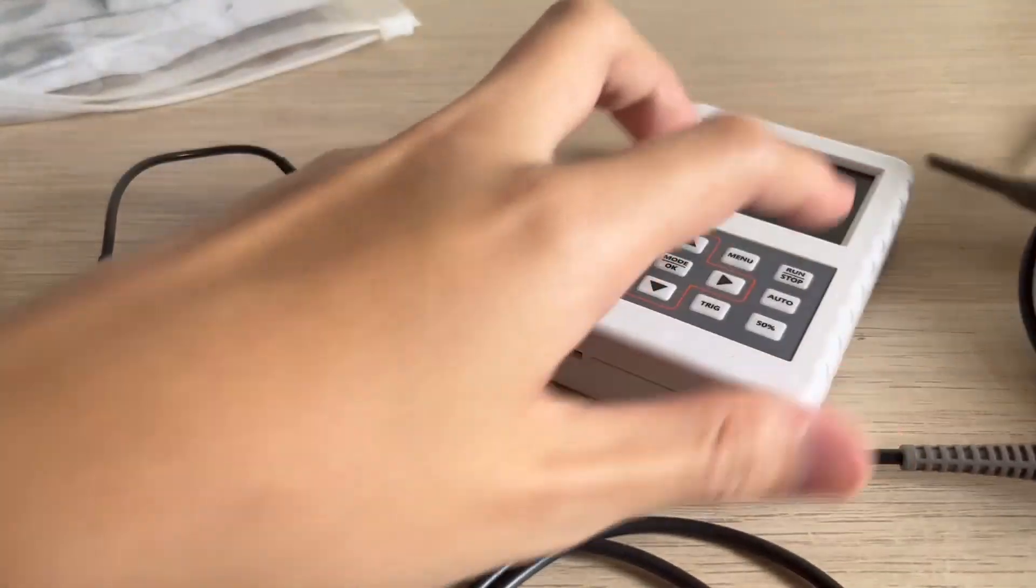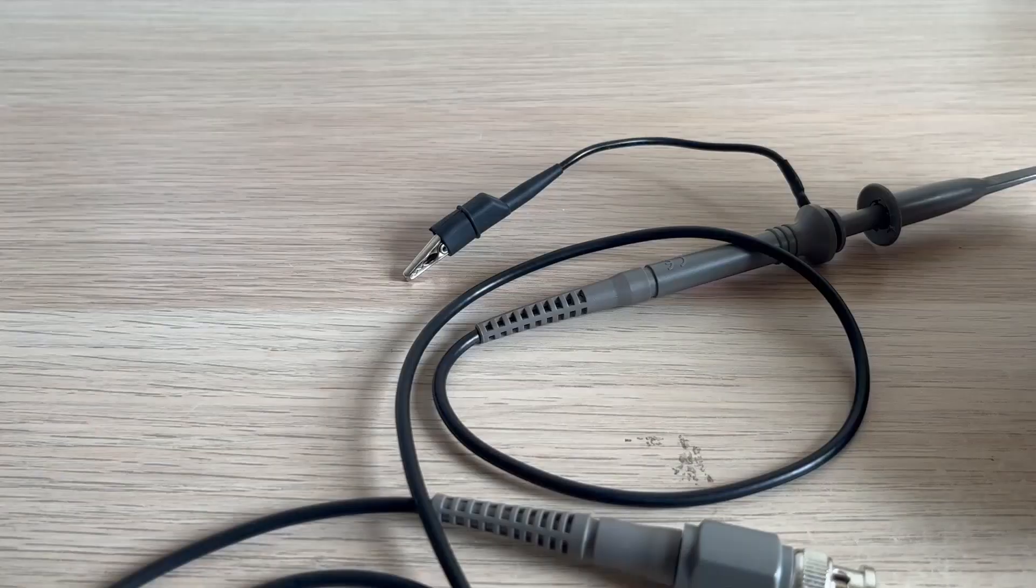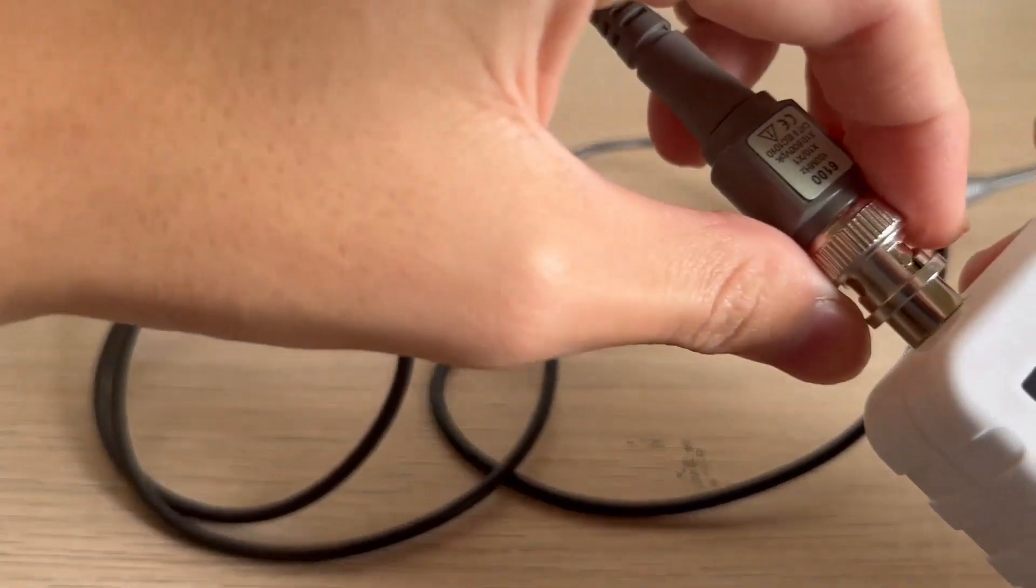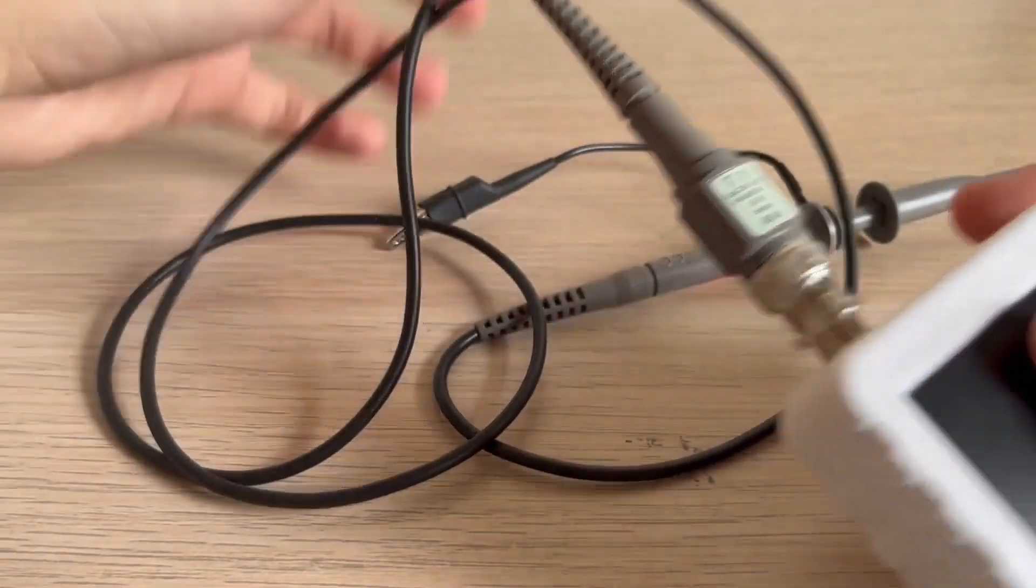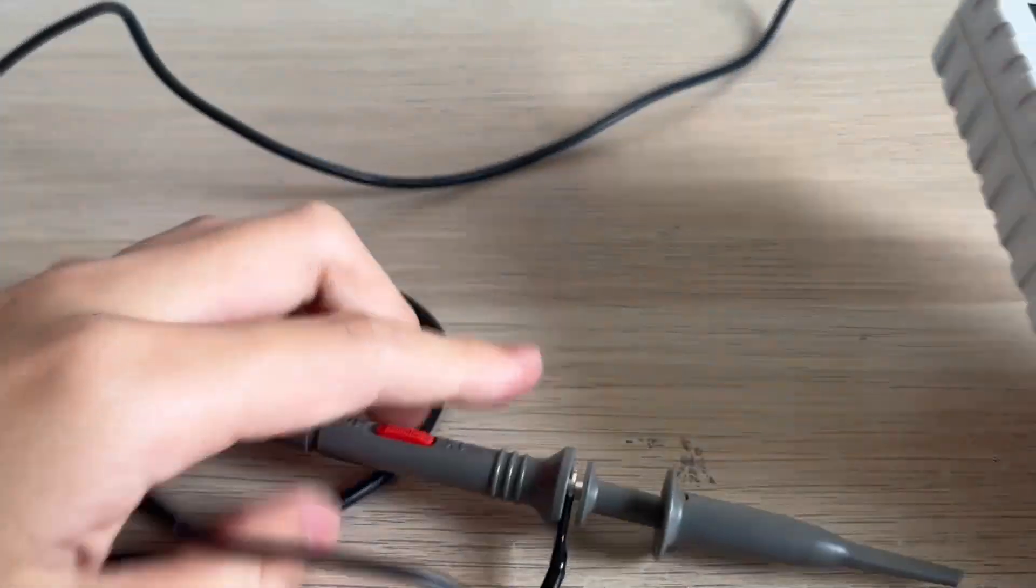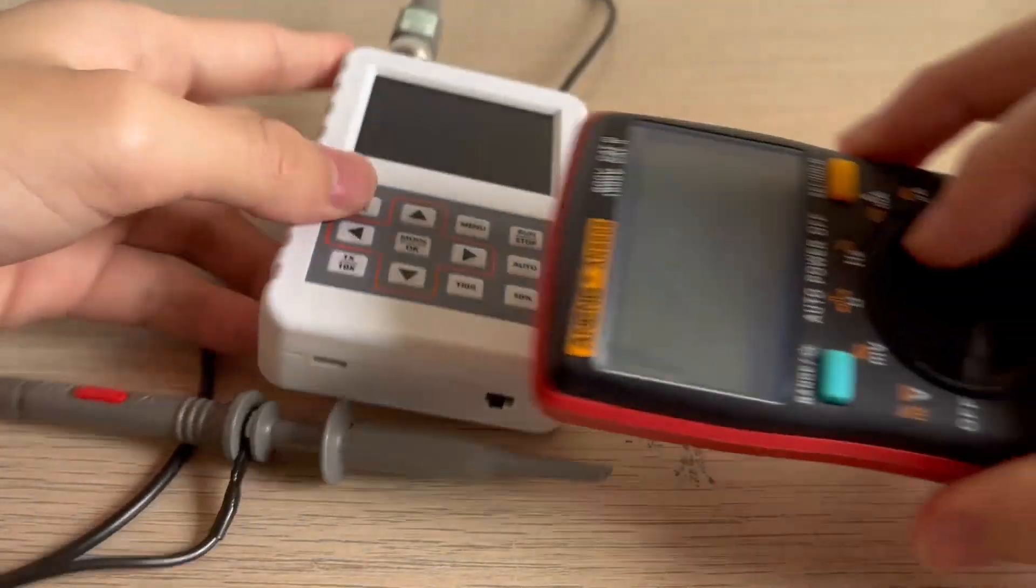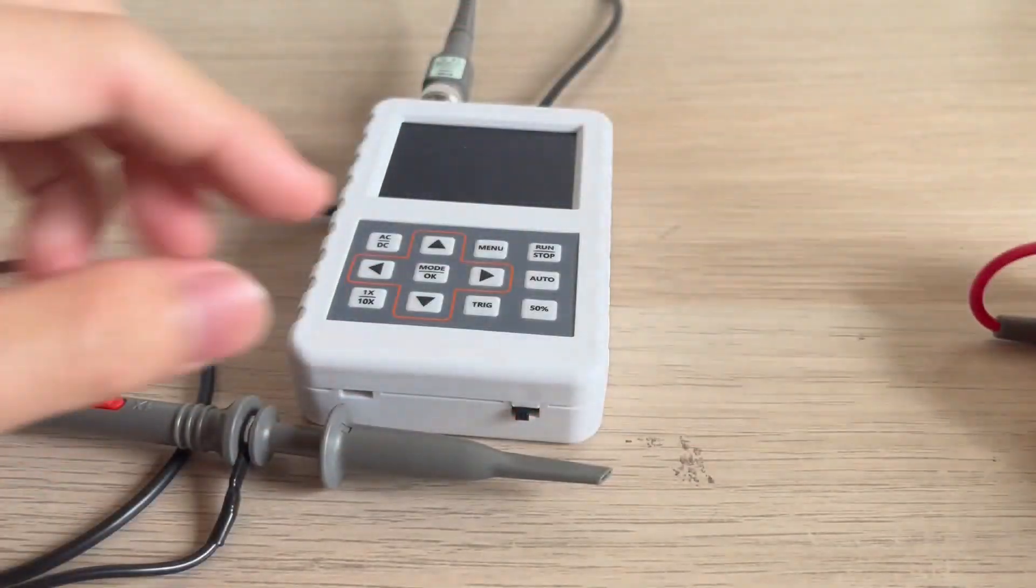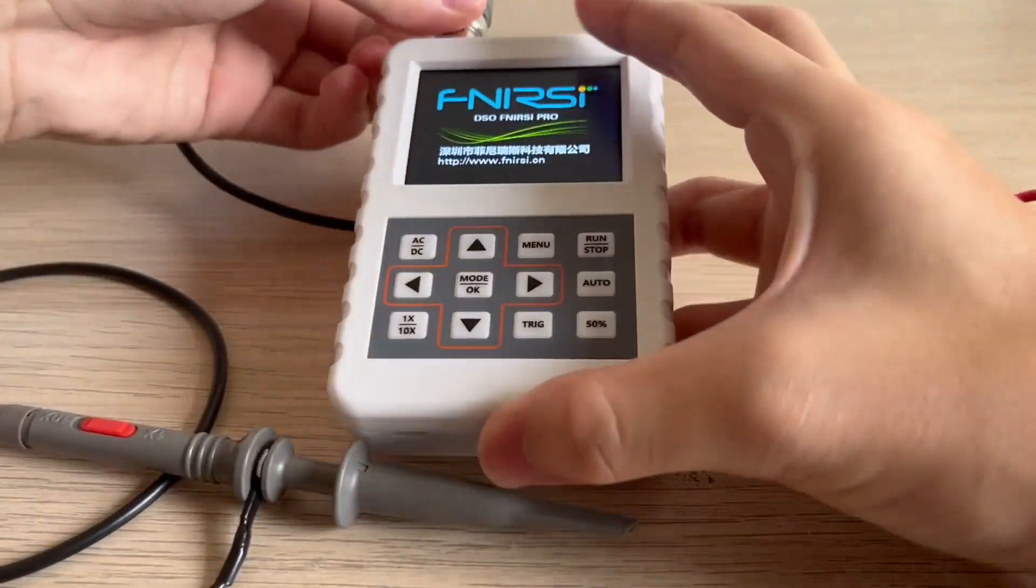Alright so let's just use one of the probes and let's connect the BNC connector to the probe like this and we are now going to measure a 1kHz signal on the multimeter and now we are going to calibrate the oscilloscope.